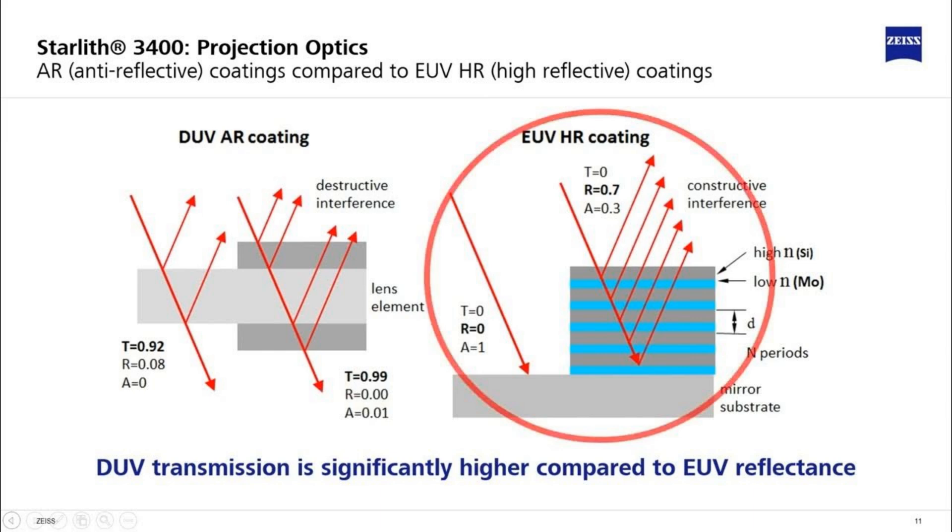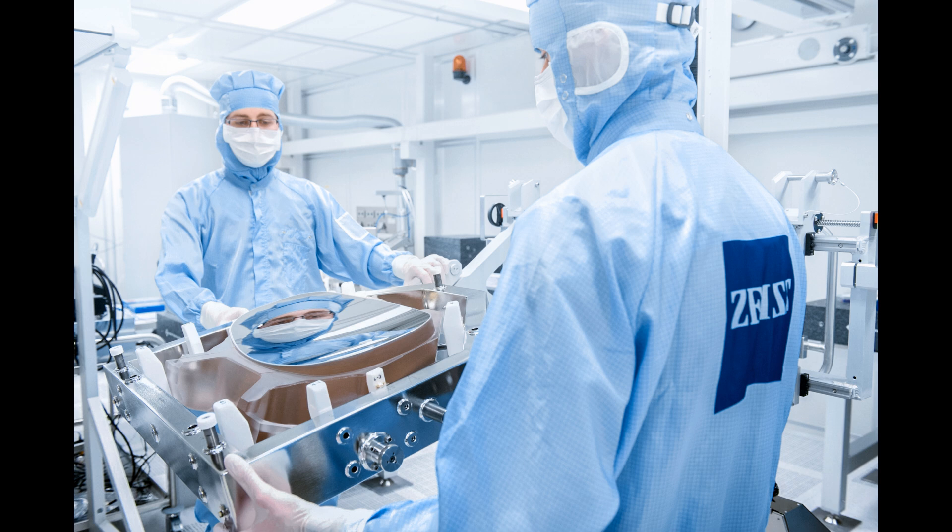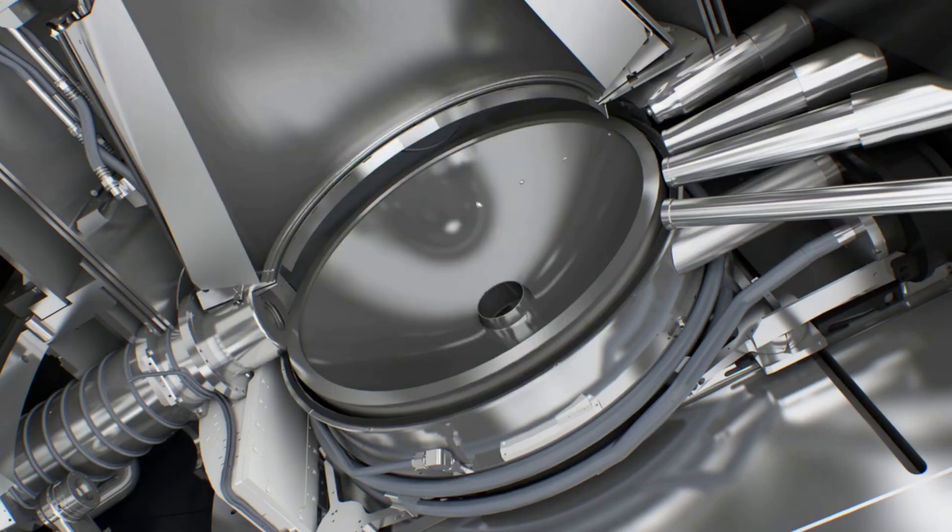But even with these mirrors, we can still only successfully reflect about 70% of the light, so the system needs to be designed in a way that minimizes the number of mirrors used. One mirror that is particularly important is the large concave mirror placed at the bottom of the area where the light is created.